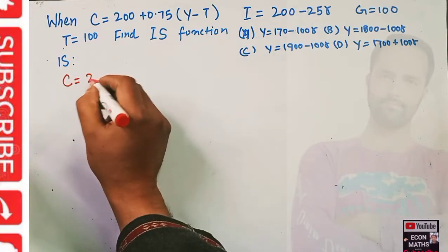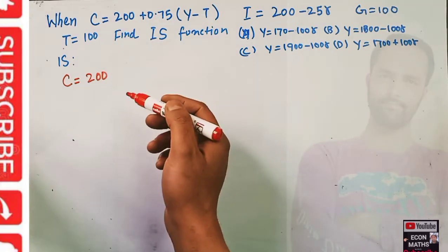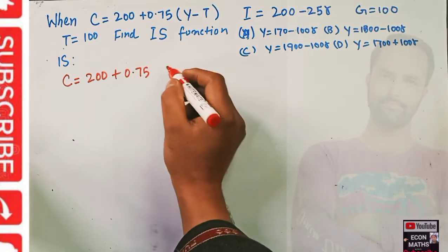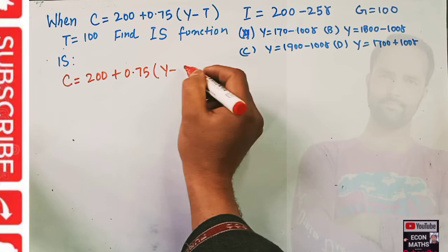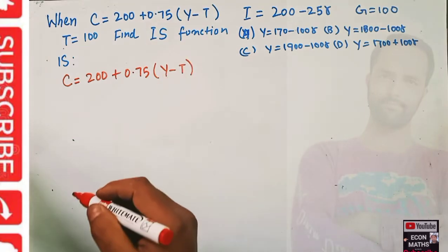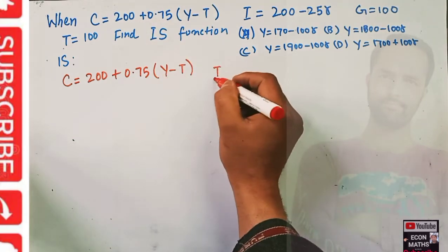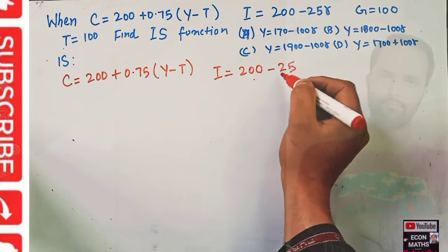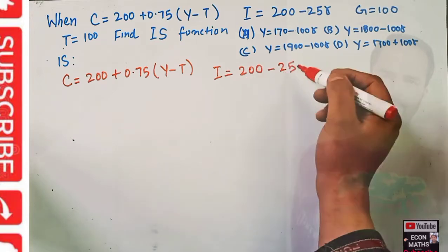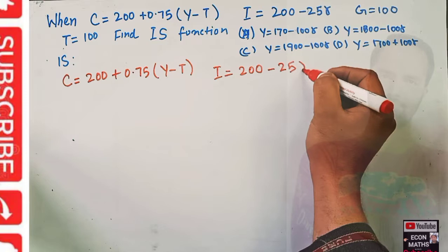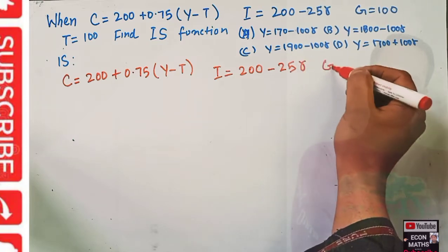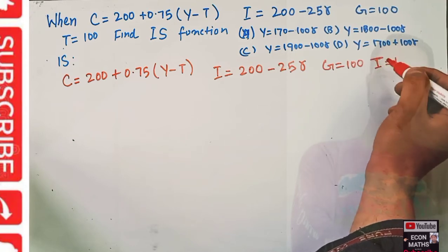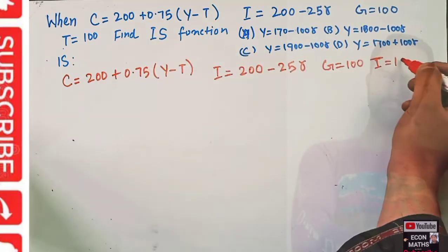The consumption function shows autonomous consumption of 200 that does not depend upon income level, plus 0.75 which is the marginal propensity to consume times Y minus T, the disposable income. Investment is given as 200 autonomous investment minus 25r where r is the rate of interest. Government expenditure is autonomous, and taxes are lump sum.